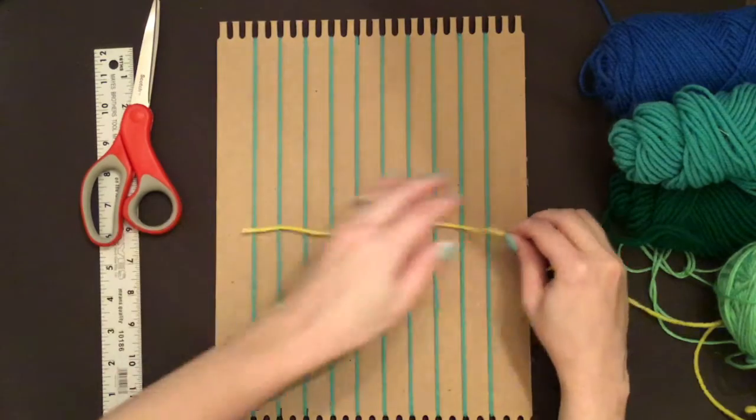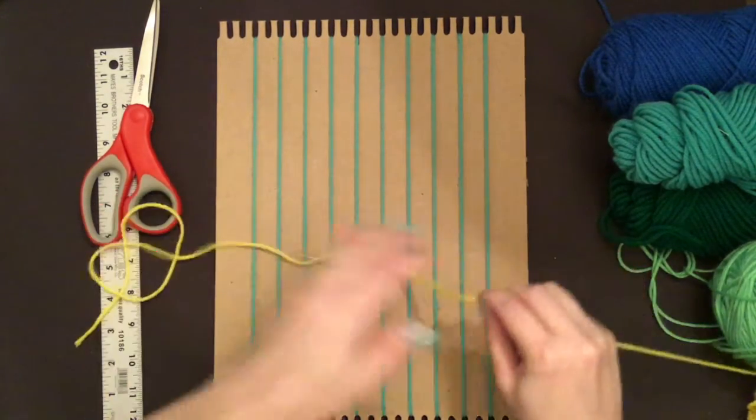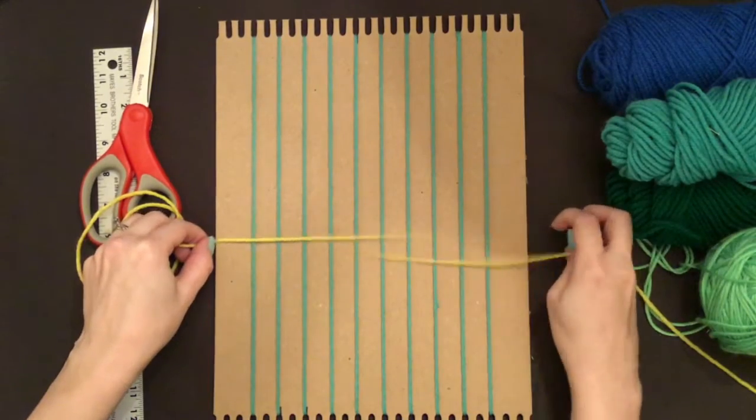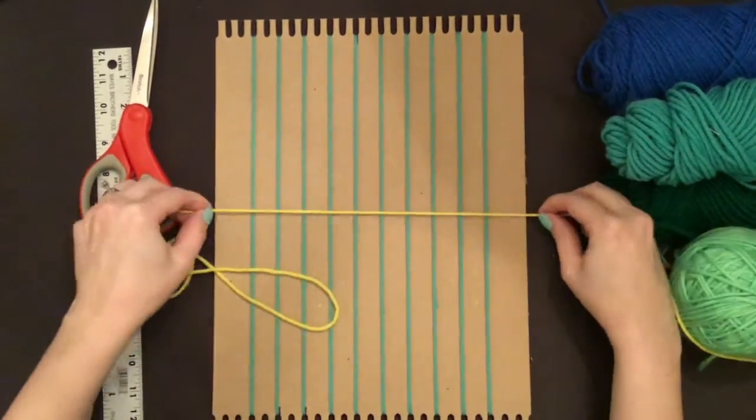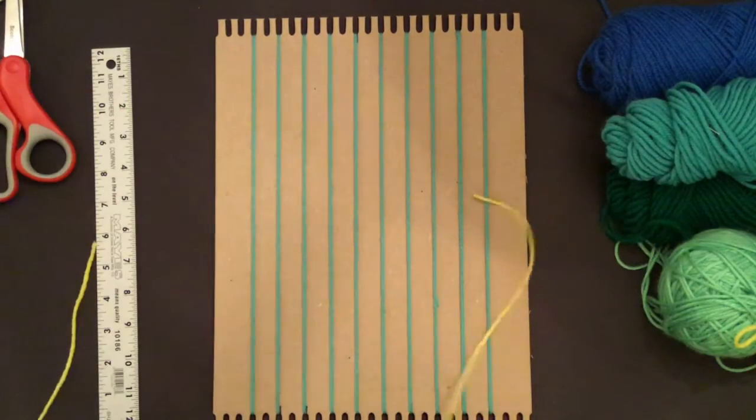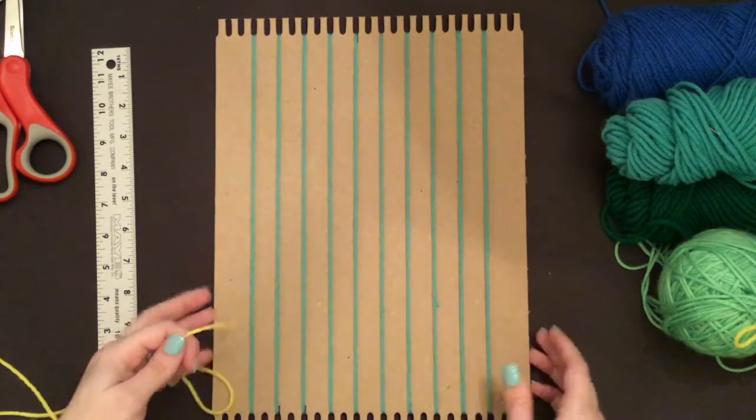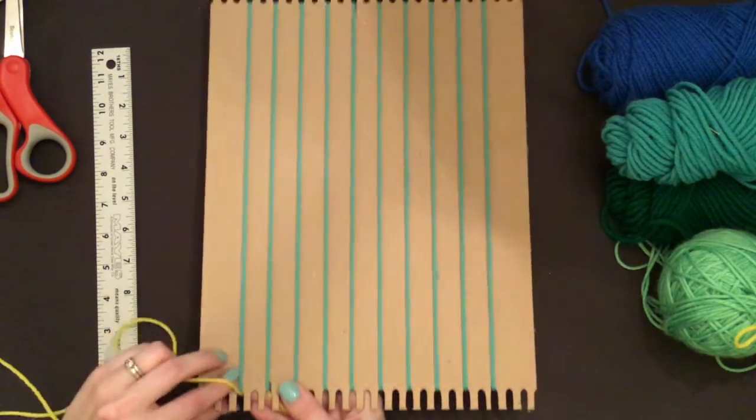To measure your yarn, measure the width of the cardboard loom six times, or you can use your wingspan from fingertip to fingertip, and then make a loop to trim the yarn. Tuck the short end under the first notch where your warp starts and tape it to the back.